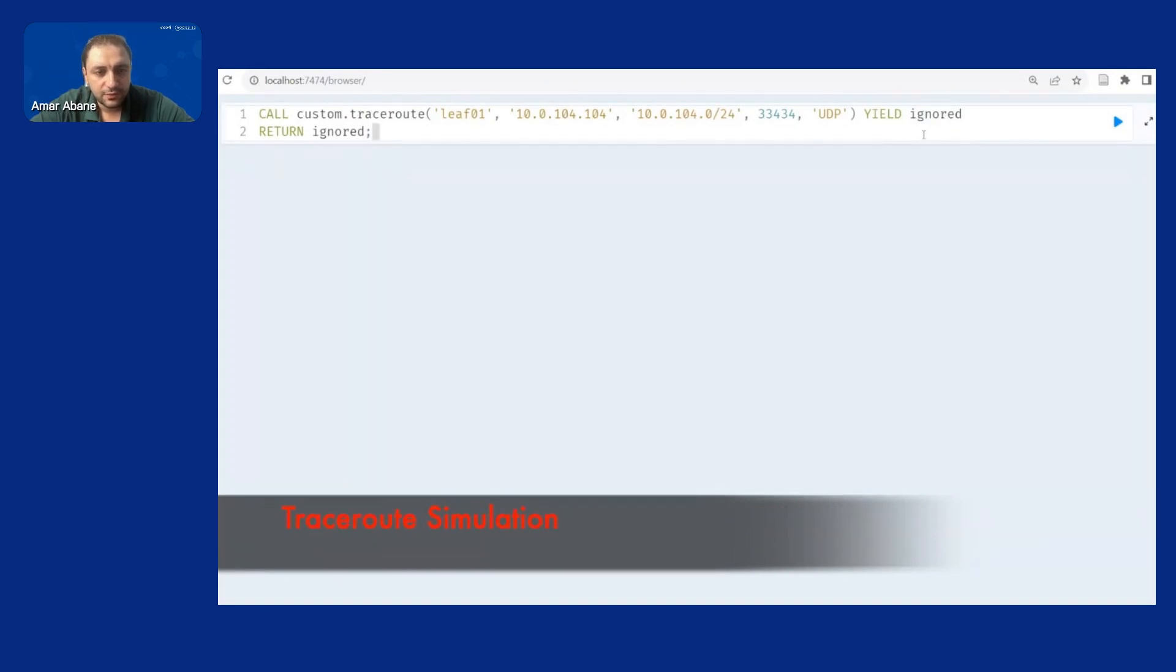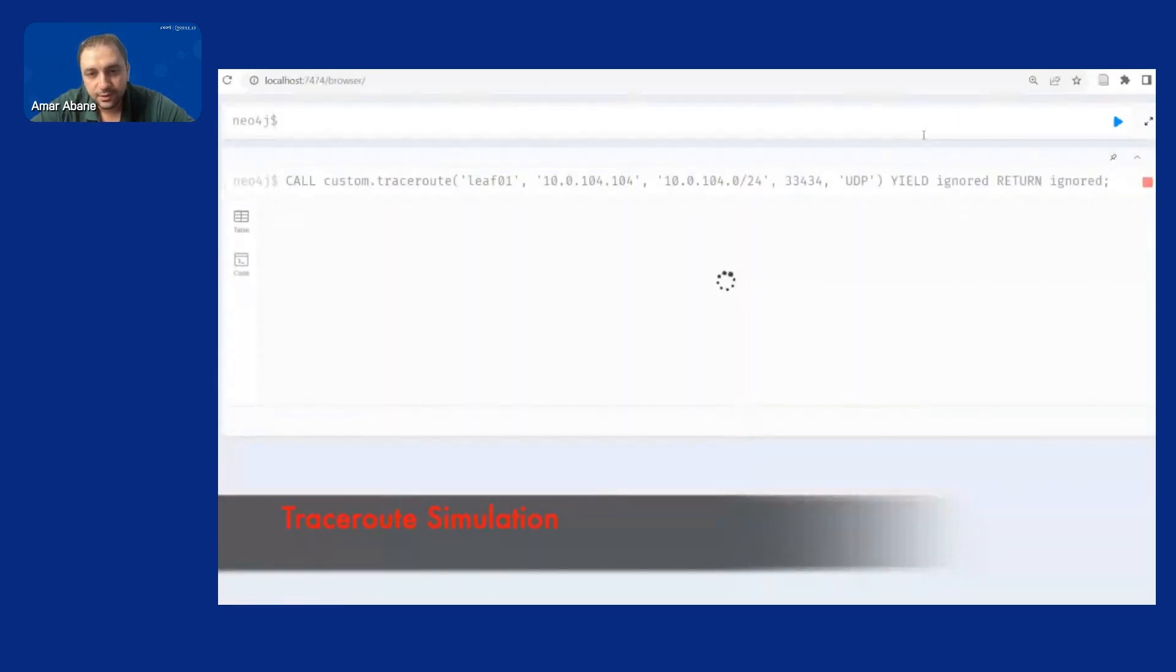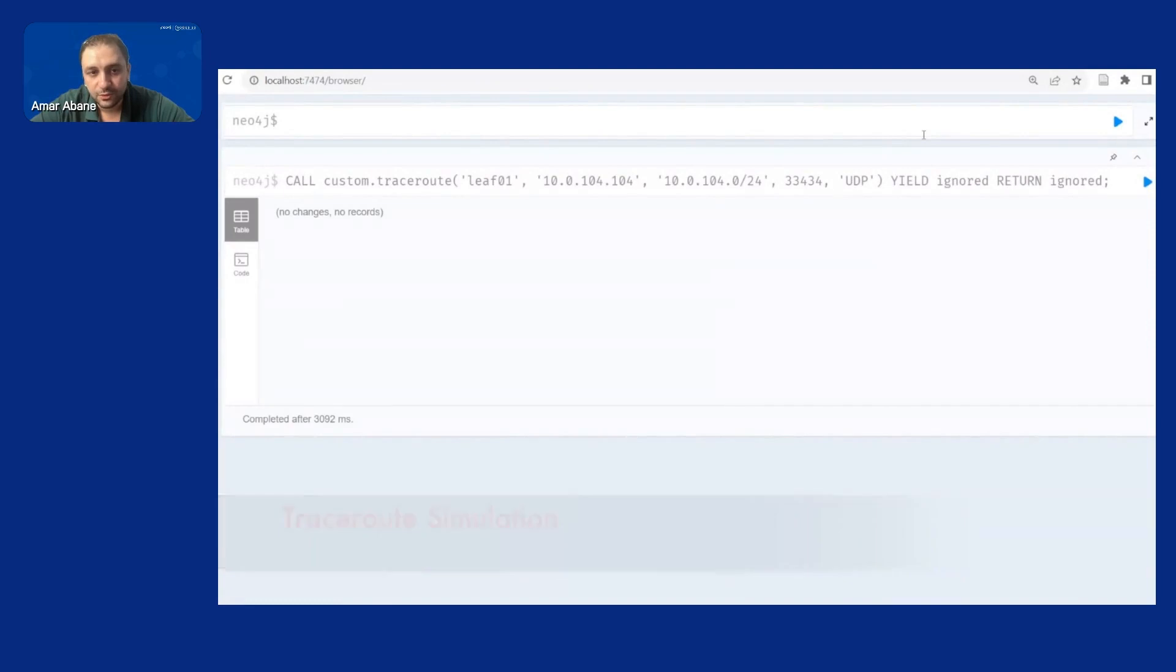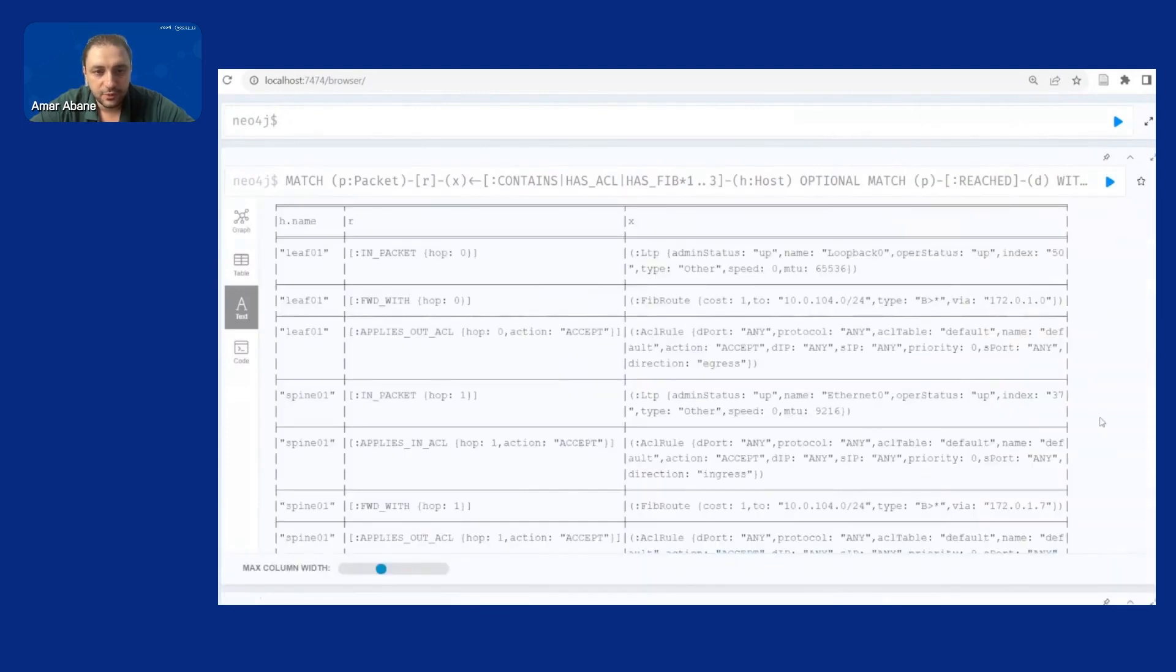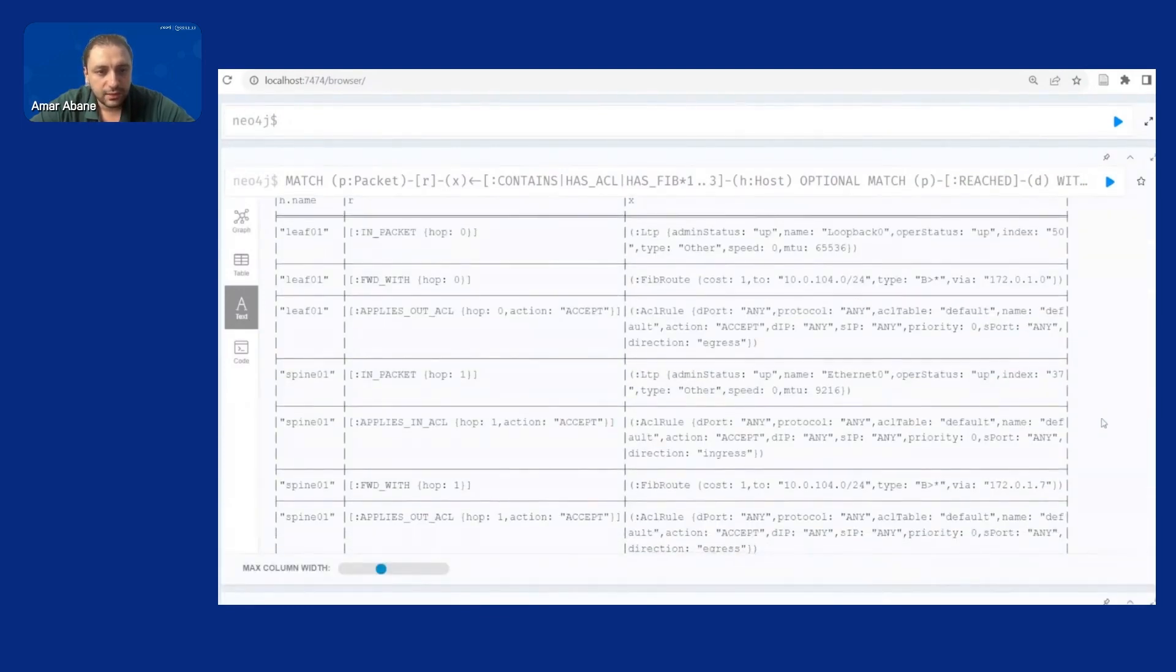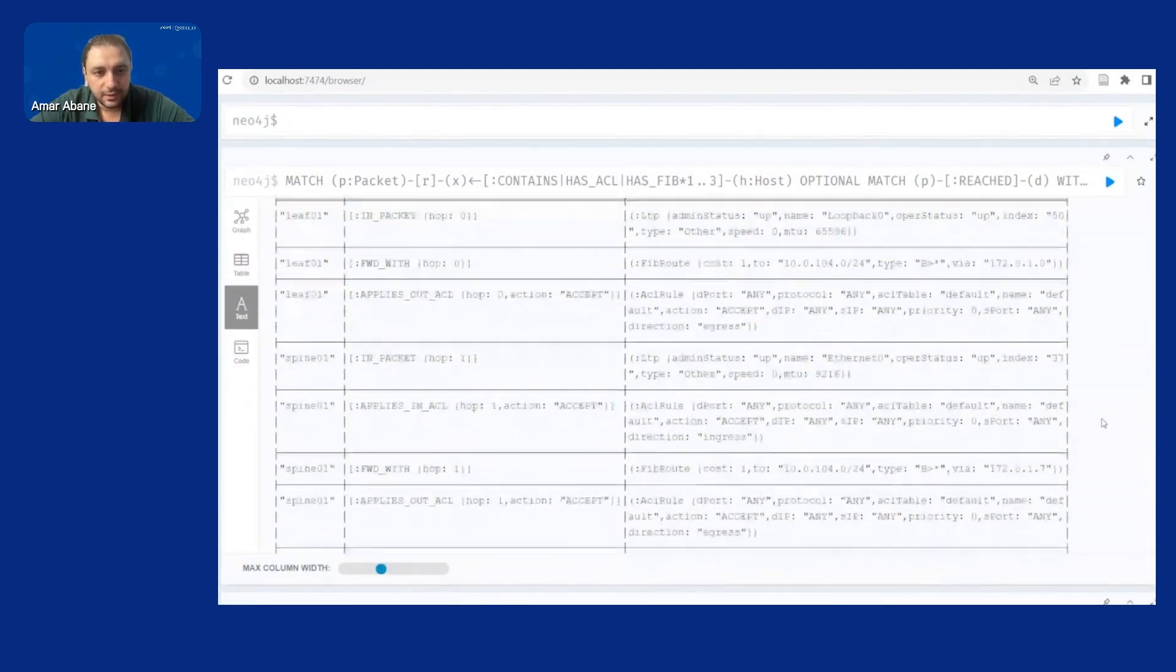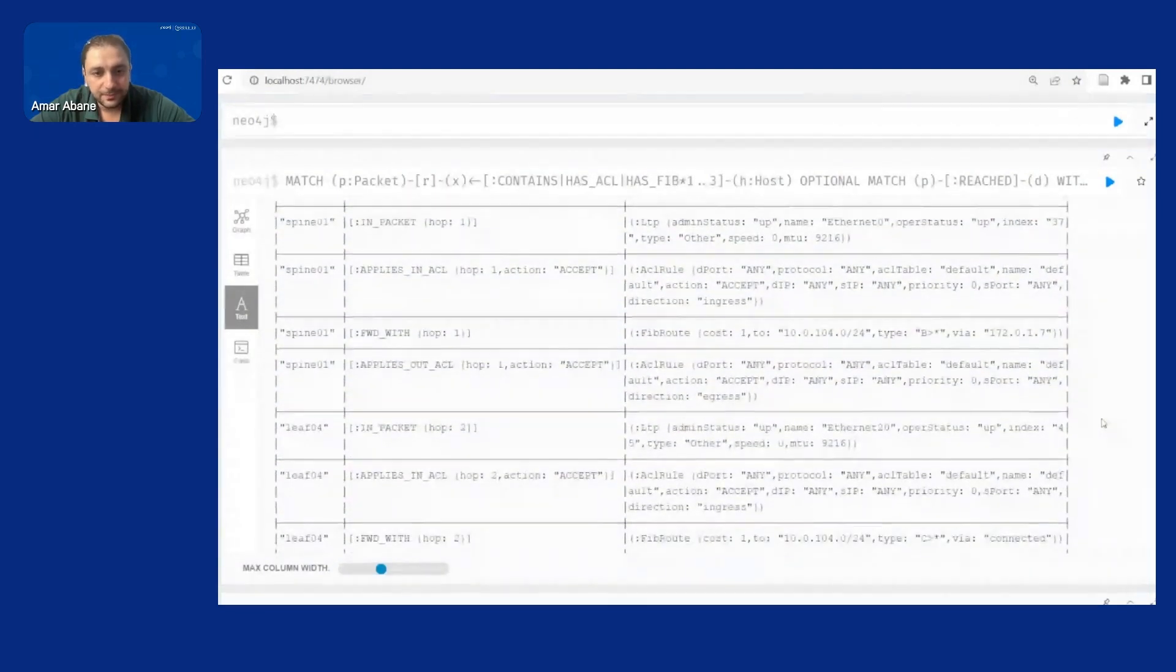Then we implemented some basic functionalities this is trace route the virtual trace route that's executed directly in the network repository so we can check reachability without having to change a tool and we get hop by hop detailed actions applied to the packet until it reaches the destination.